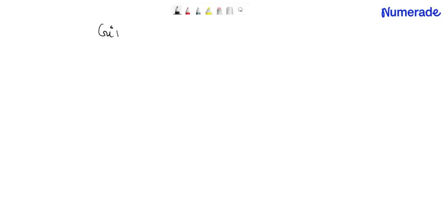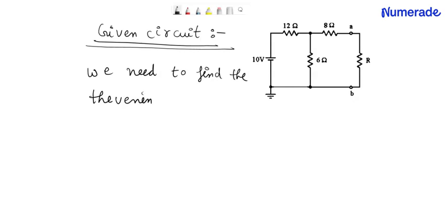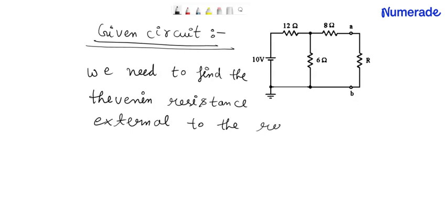The given circuit is as follows. We need to find the Thevenin resistance external to the resistor R.